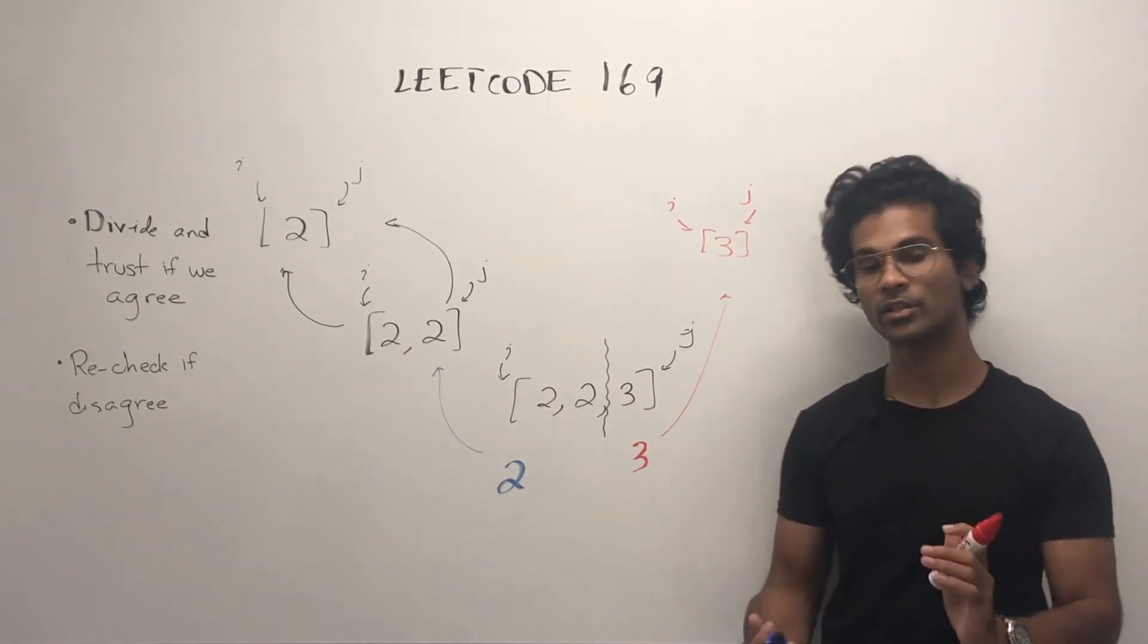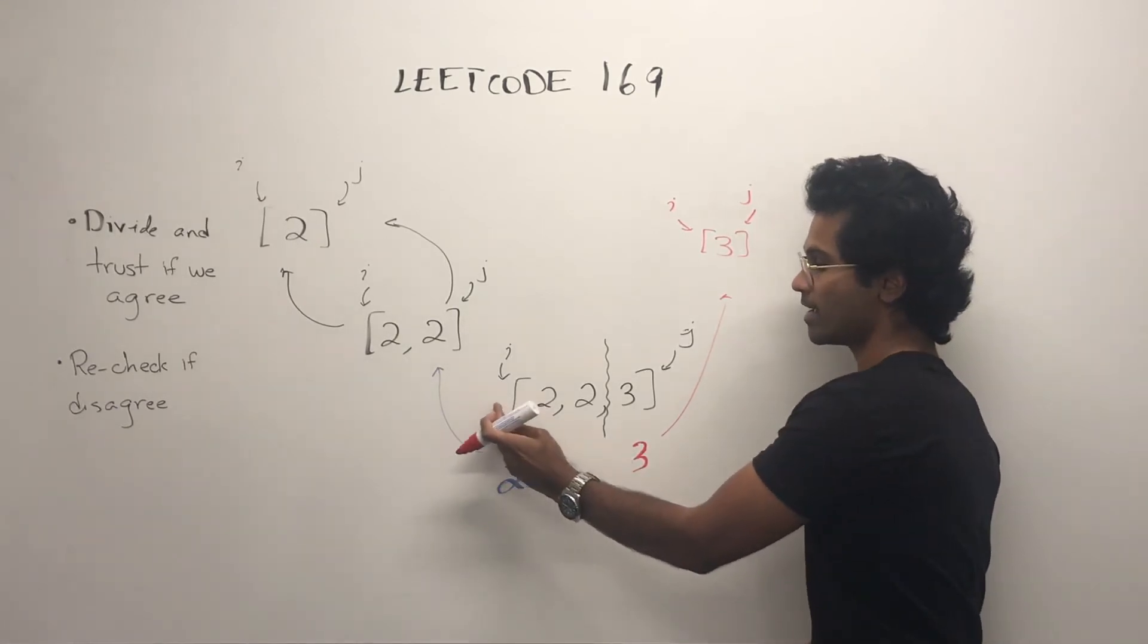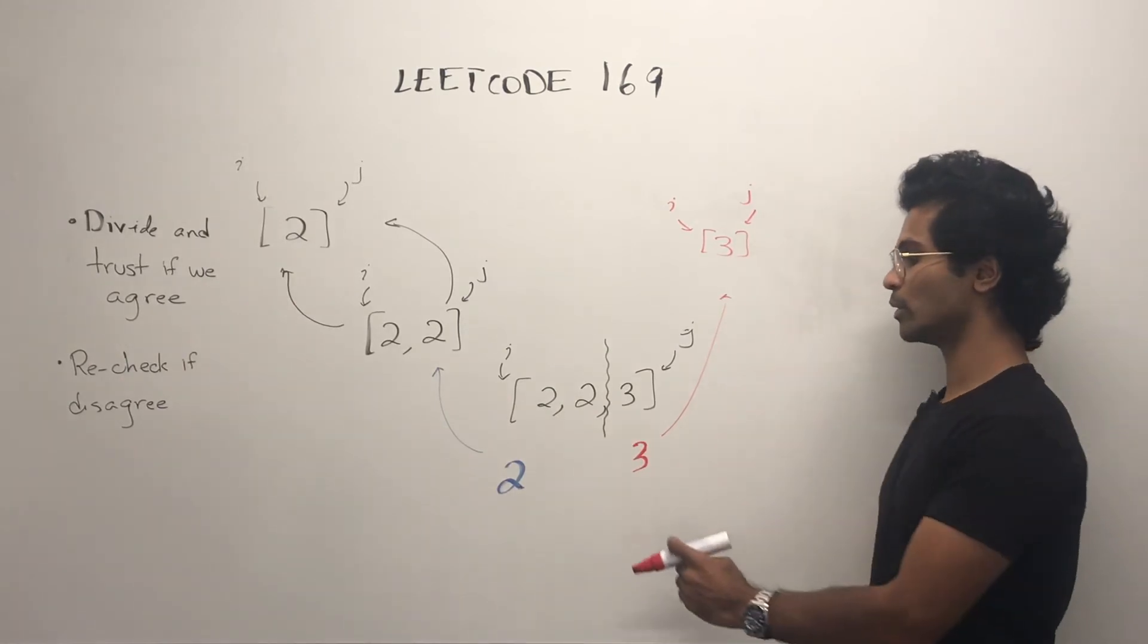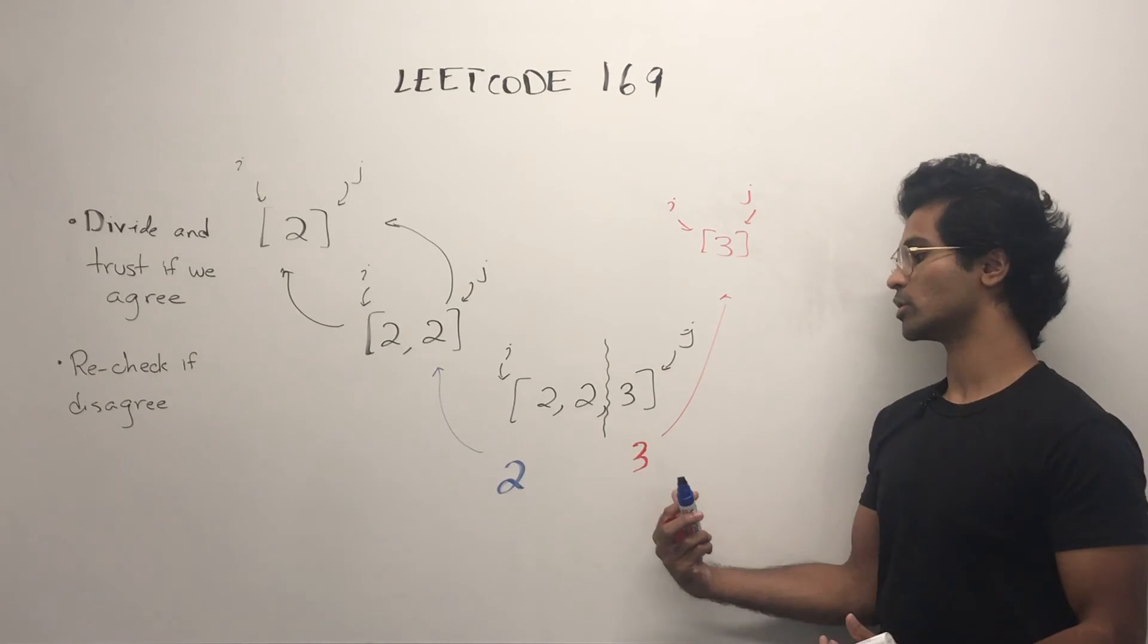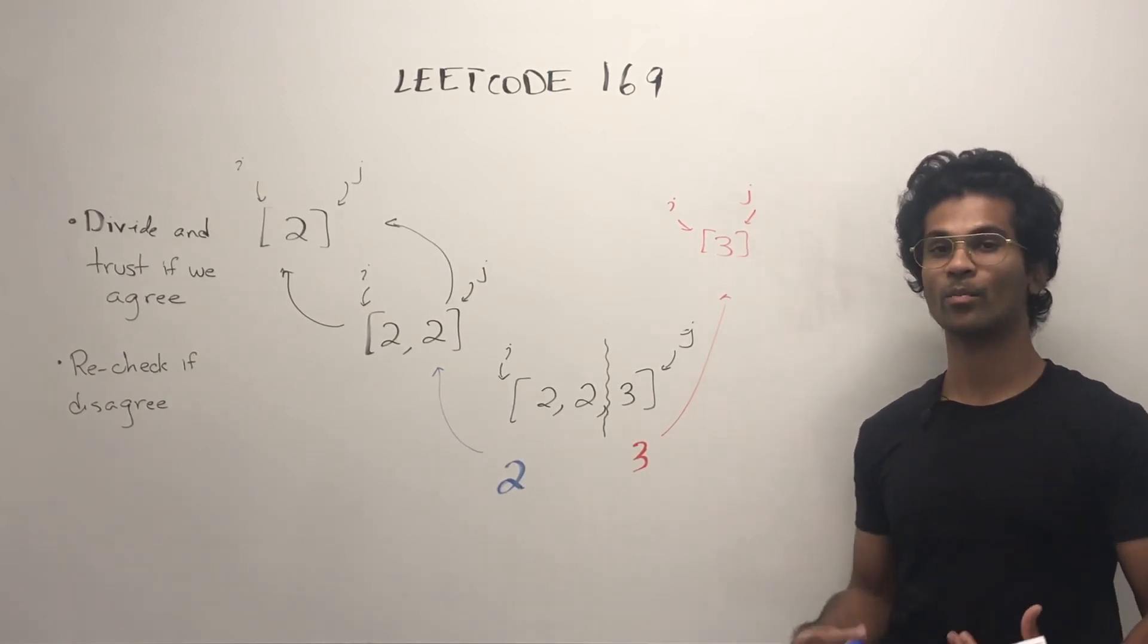We are going to do a count between i and this midpoint to see how many times two showed up. We're going to do a count between this midpoint and j to see how many times this three showed up. Whichever number has a higher count is the number we're going to return.